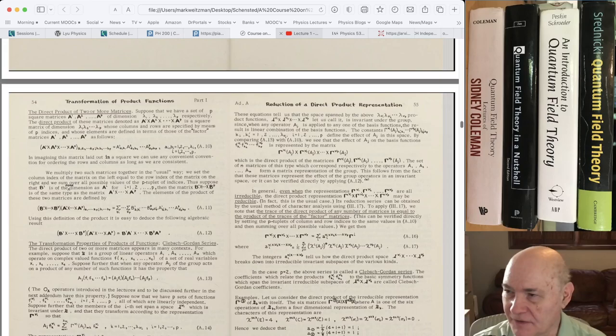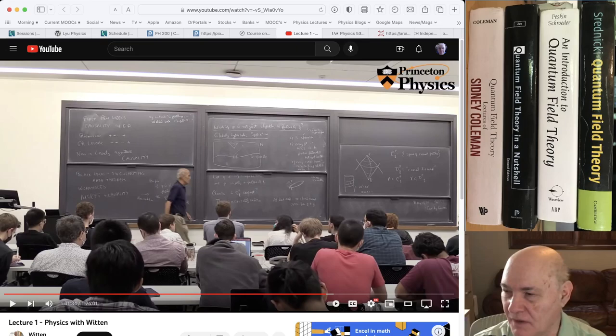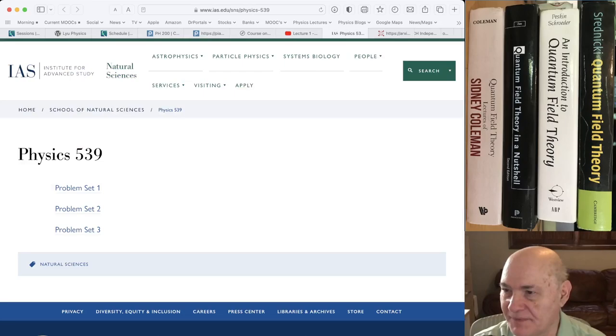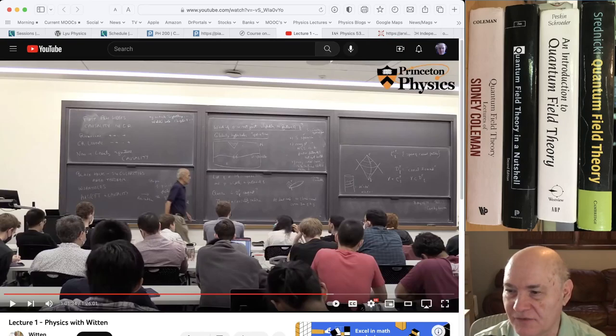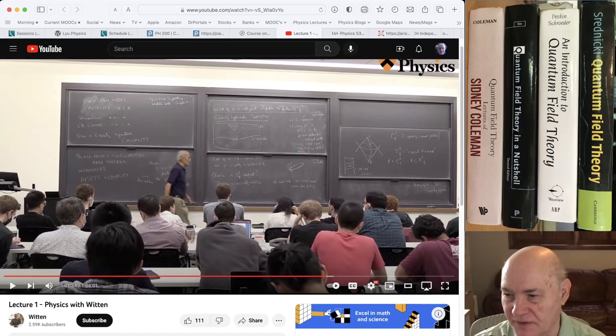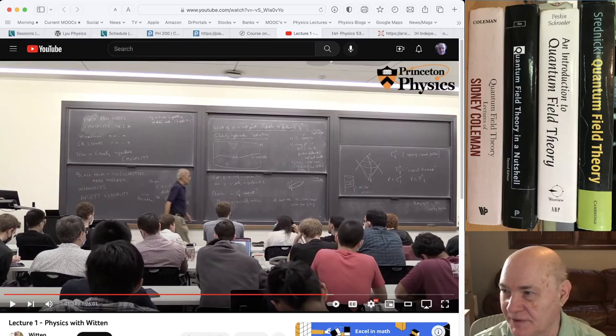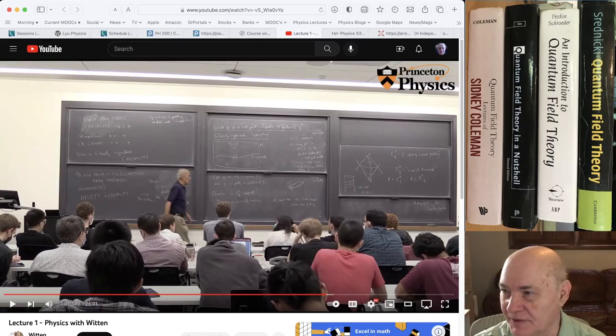The next thing I want to mention is, I found this on White's blog, Peter White's blog, but Steve Witten is teaching a course at Princeton now. It's called 539 topics in high energy physics. And there are some problem sets online and the lectures are available on YouTube. Google lecture one is physics with Witten. And a lot of this is on classical general relativity and boundary conditions, but he's going to go very far, I'm sure. And I'm sure it's not that much for beginners, but anyway, it's out there. So that's Witten's course.